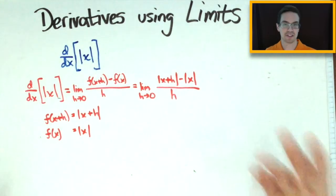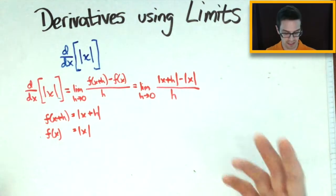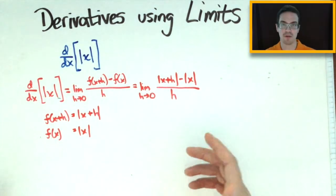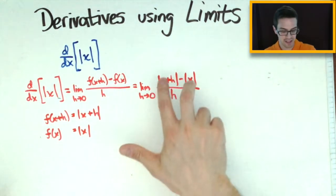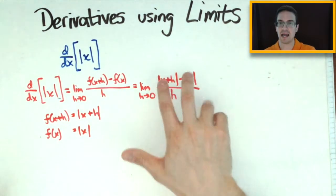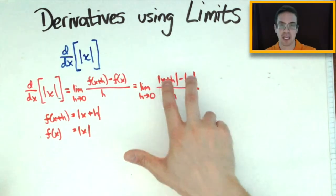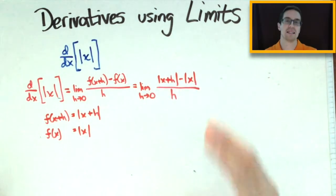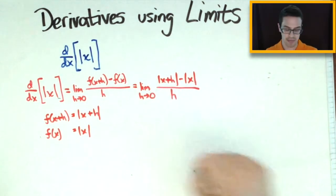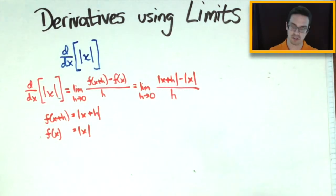That zero over zero gives us the hint that we can use some other technique to make direct substitution work. That technique is the rationalizing technique. In this case it's not actually irrational, but we can still use that technique with absolute values, and I'm going to show you right now.